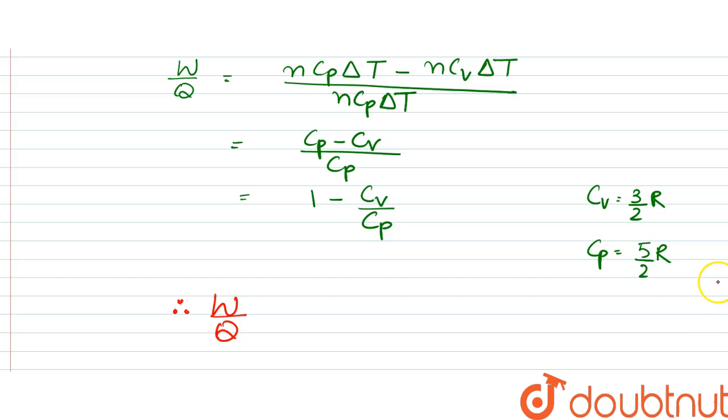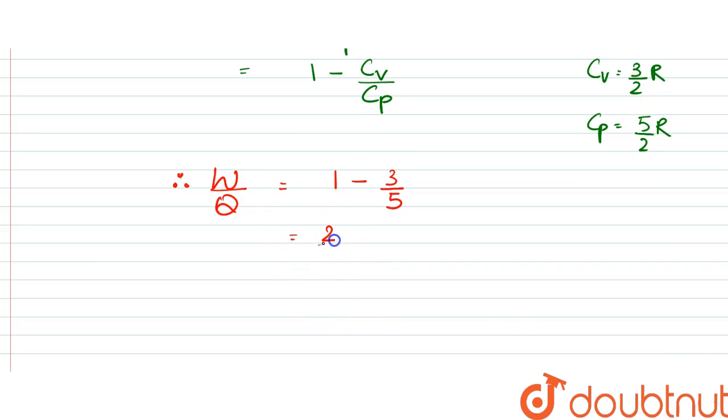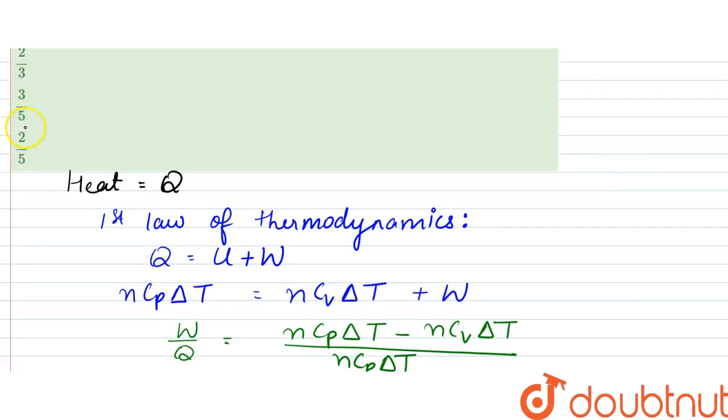that goes into mechanical work is equal to one minus three by two R by five by two R. R by two gets cancelled, so we have three by five. It would become two by five. So this is the amount of fraction. Our answer would be option d.